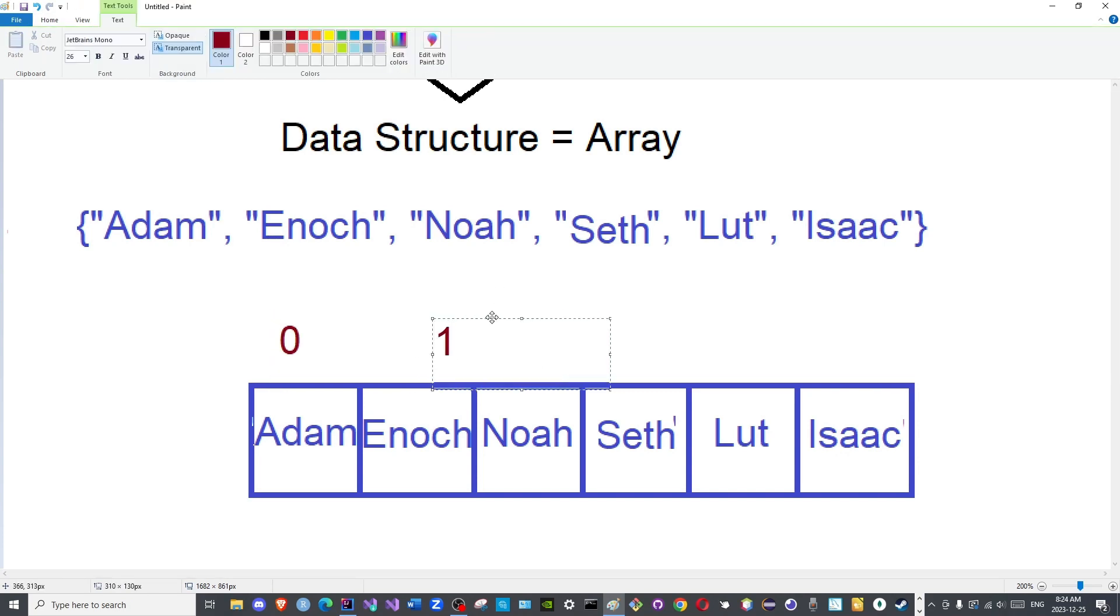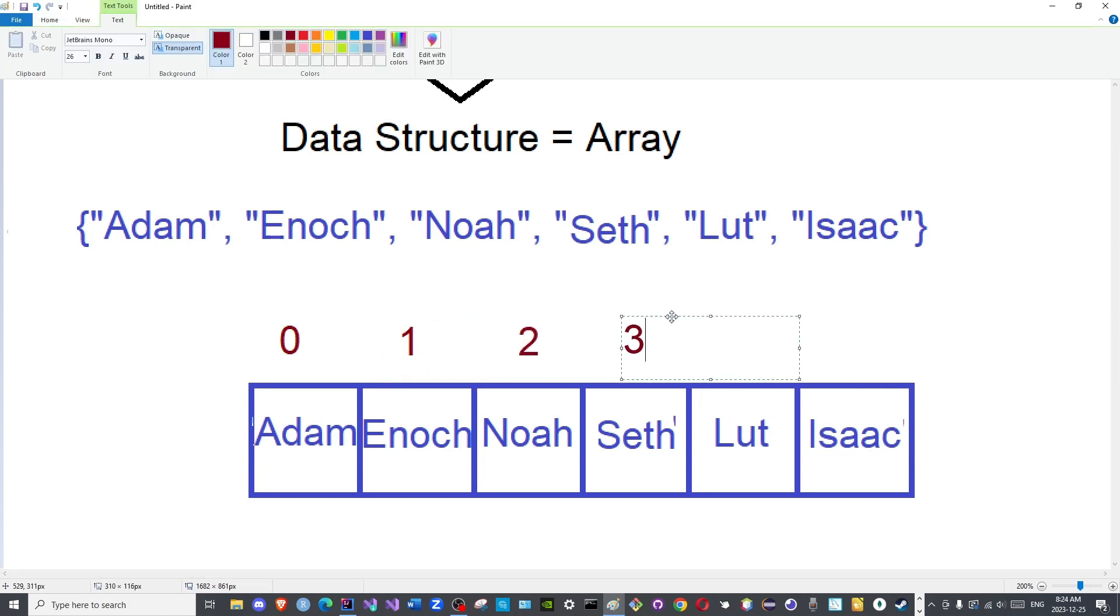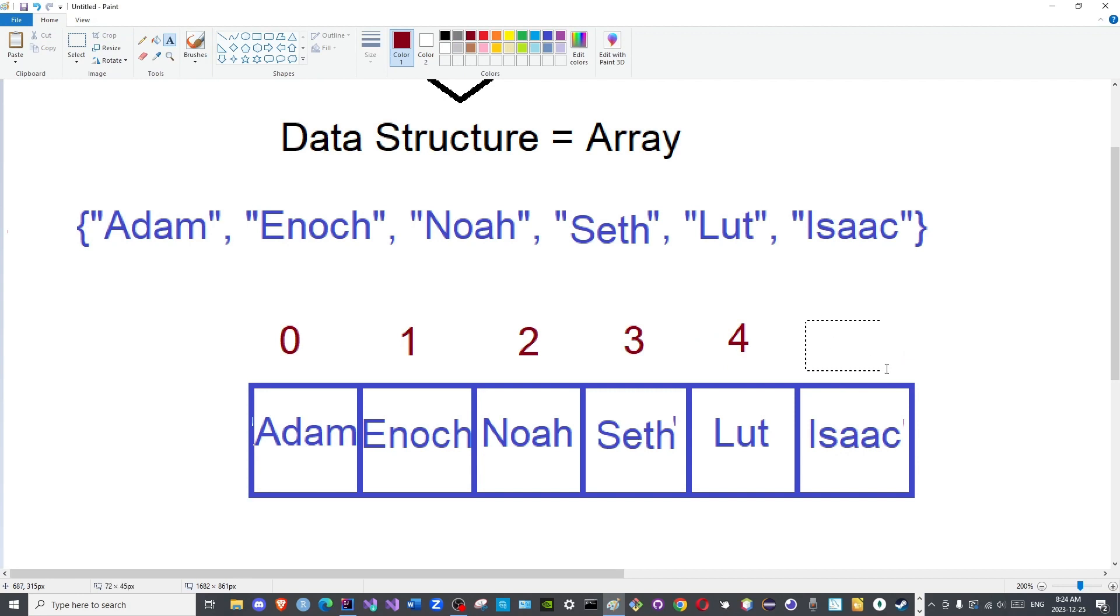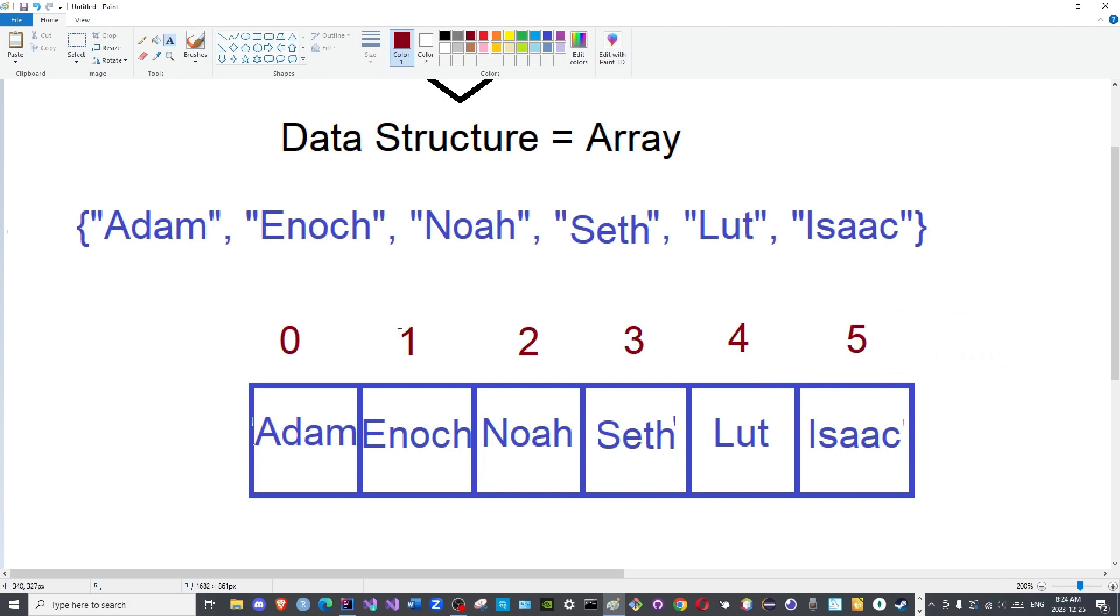Here I will write the index of each element. So we begin with zero, then we have one, two, three, four, and five. These are the indexes or indices of the elements of this array.